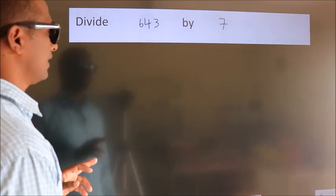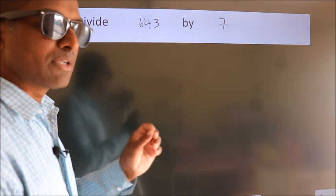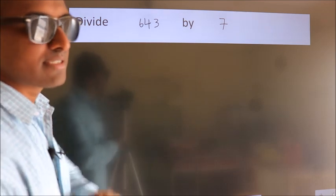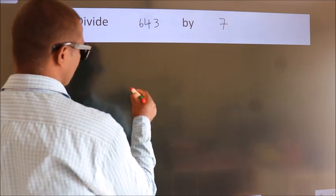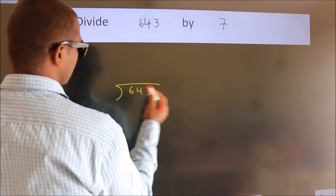Divide 643 by 7. To do this division, we should frame it in this way. 643 here, 7 here.